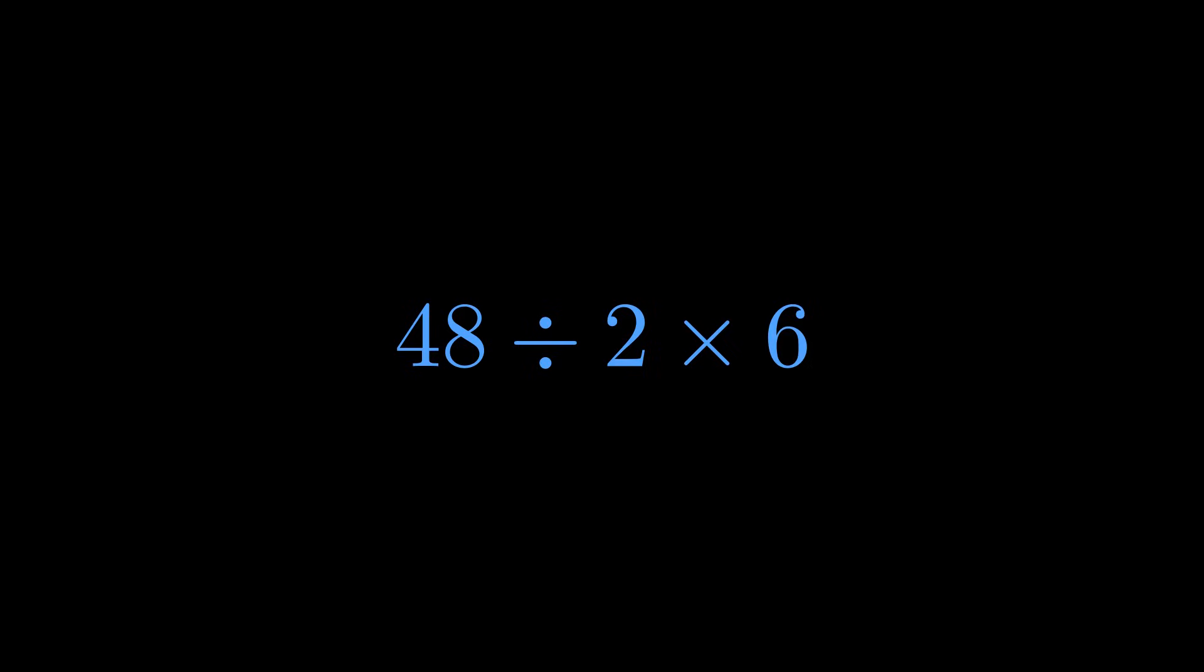Division and multiplication have the same priority, so we work left to right. Division comes first simply because it's on the left. 48 divided by 2 gives us 24. Leaving us with this final multiplication. 24 times 6 is 144. By the standard rules, that's the answer. But wait, there's more to this story.